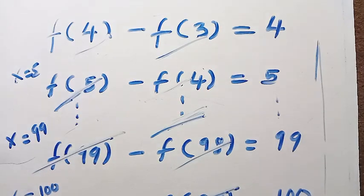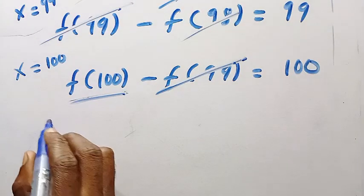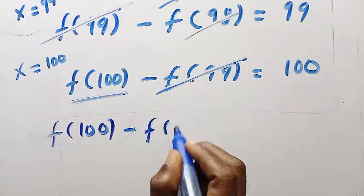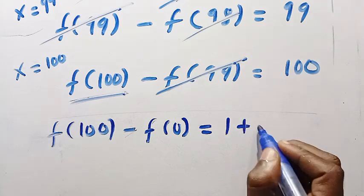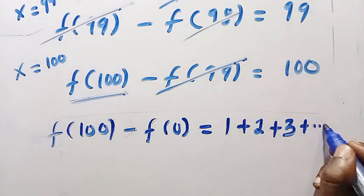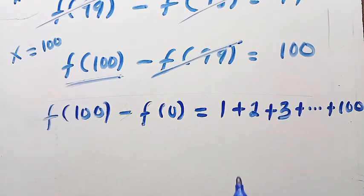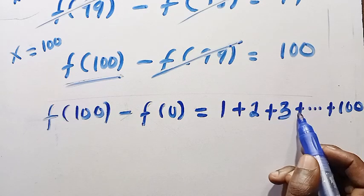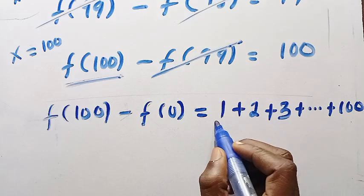By adding all these together, we are going to have f(100) - f(0) = 1 + 2 + 3 + ... continuing to 100. Well, how can we be adding all these values together? From 1 + 2 = 3, 3 + 3 = 6, 6 + 4 = 10. There is a way to do that, because just adding individually would take our time.